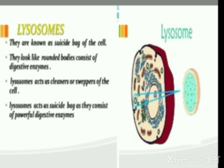Lysosomes are the waste disposal system of the cell — all waste materials are digested by them, so they are also called the dustbin of the cell. They are also known as the suicidal bags of the cell. Suicide means killing oneself: if some cells get damaged, the lysosome membrane will burst, and the released enzymes will digest the entire cell contents.